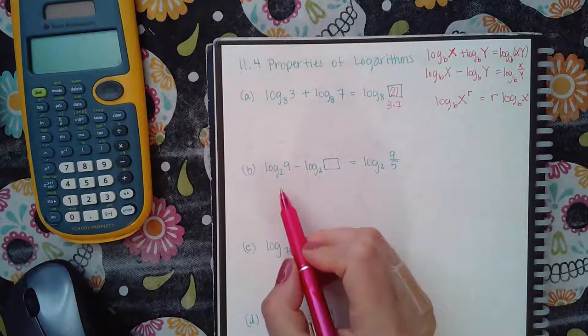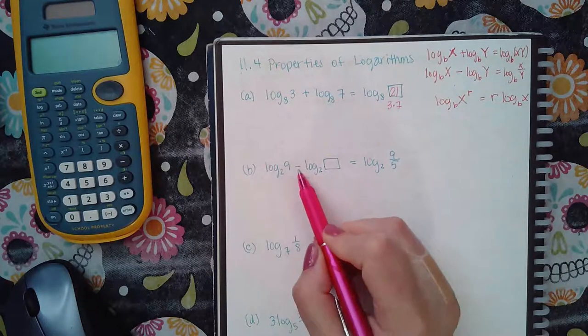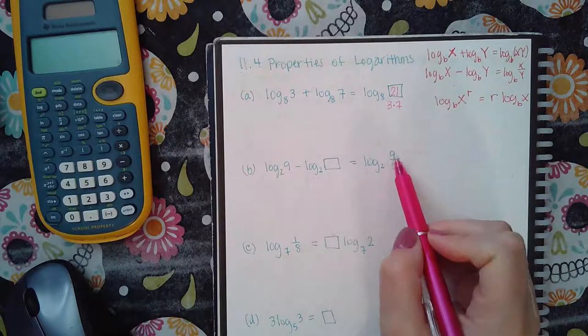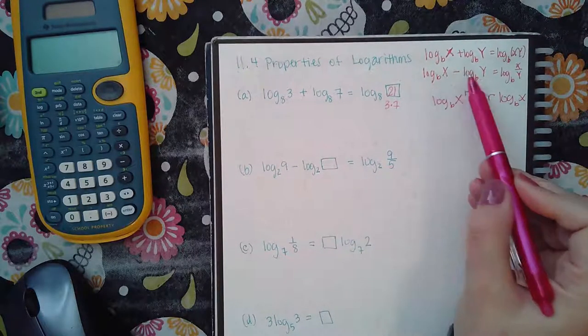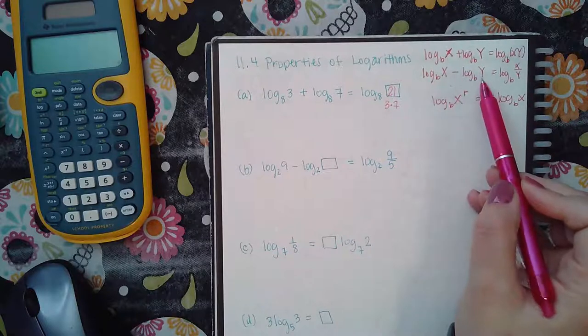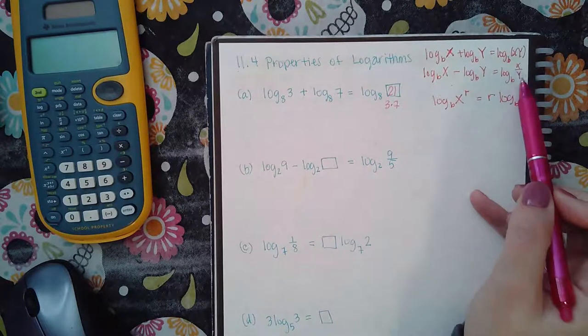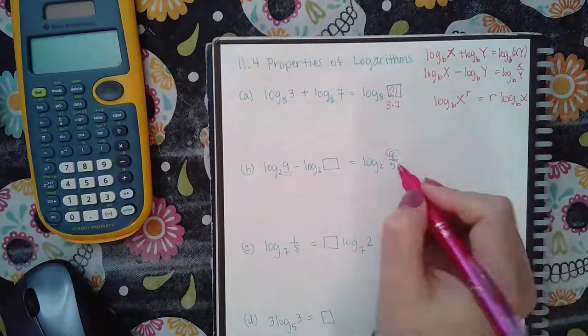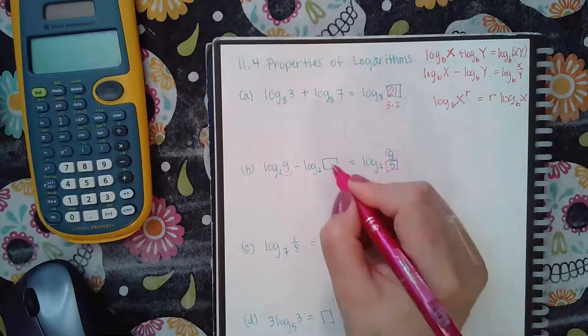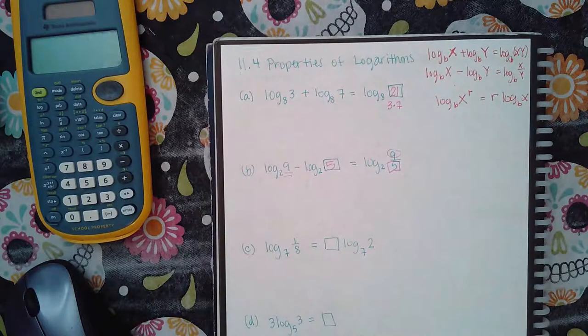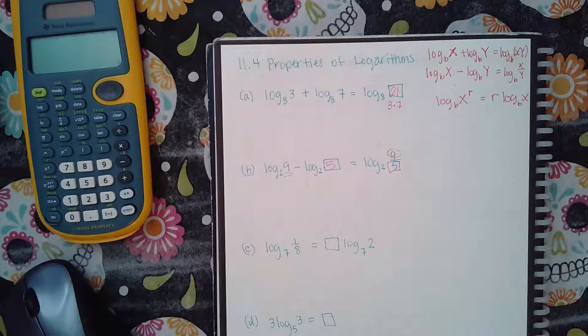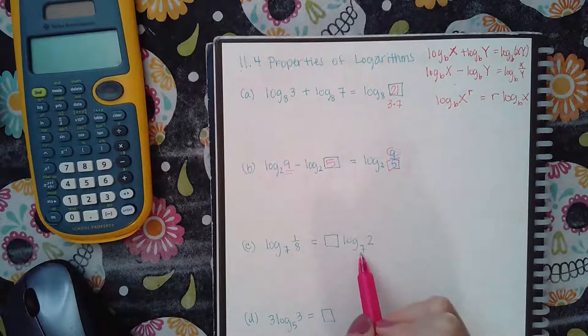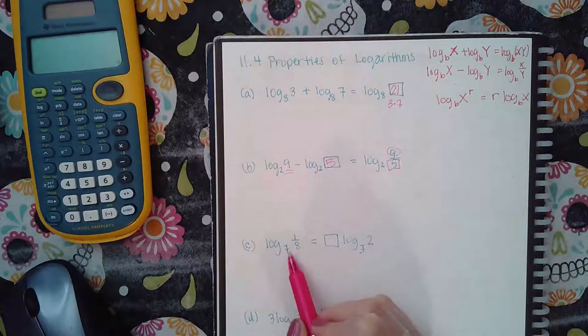Similarly, when you have log base 2 of an argument minus log base 2 of another argument, the arguments should end up getting divided. This argument minus this argument means the first one divided by the second one. Since I already know that 9 is on the top and in the front, and the 5 is at the bottom, then it's a 5 that goes inside this expression in the box to make that true.